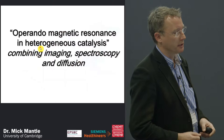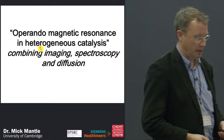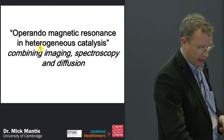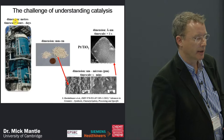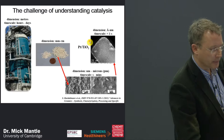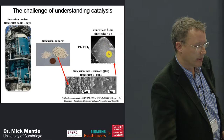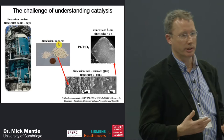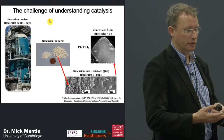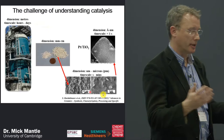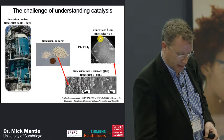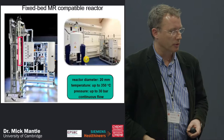Now moving on to how we can use magnetic resonance in heterogeneous catalysis — in particular combining imaging, spectroscopy, and diffusion to learn about deactivation mechanisms. The challenge in heterogeneous catalysis is understanding what happens at the angstrom scale and scaling that up to the meter scale. NMR in its forms of PFG and relaxometry allows us to cover length scales all the way from meters down to microns, bridging the knowledge gap between chemical kinetics and heat and mass transfer effects.